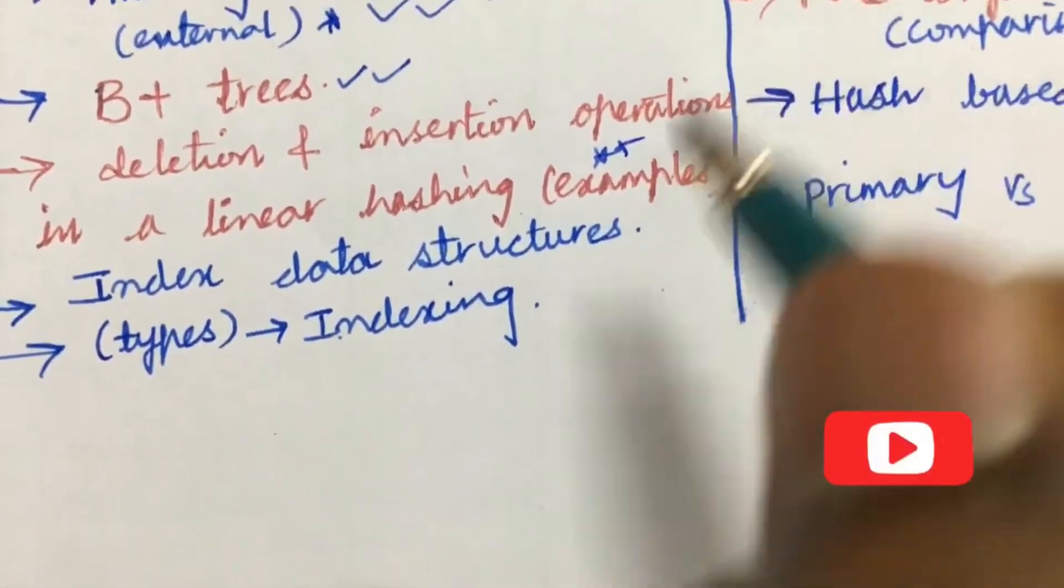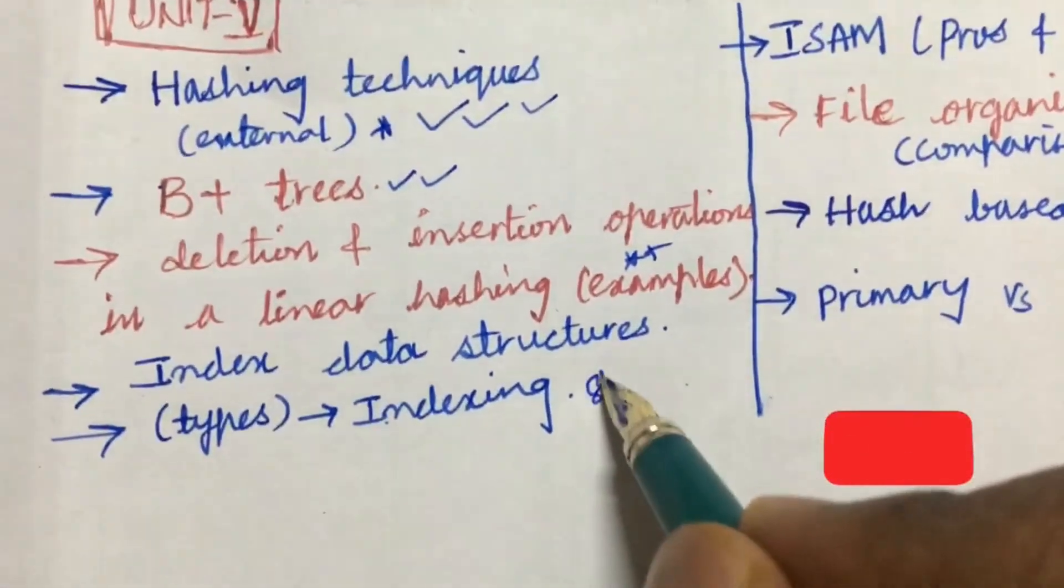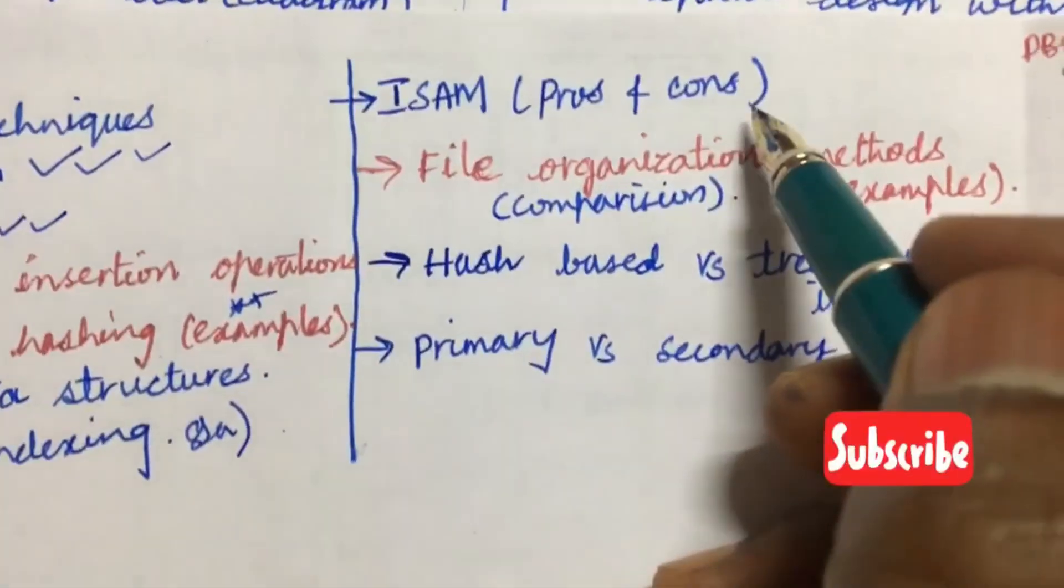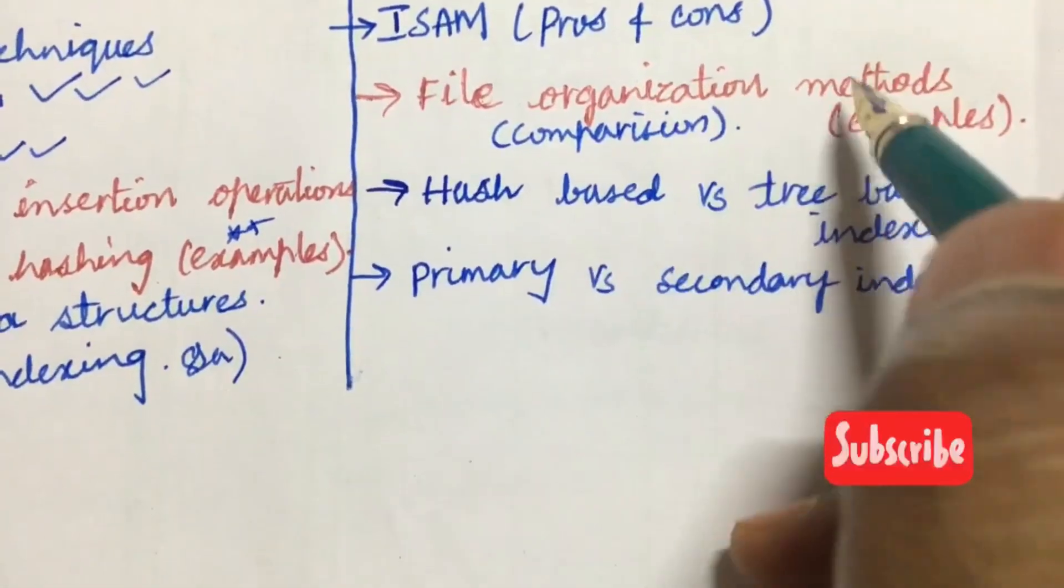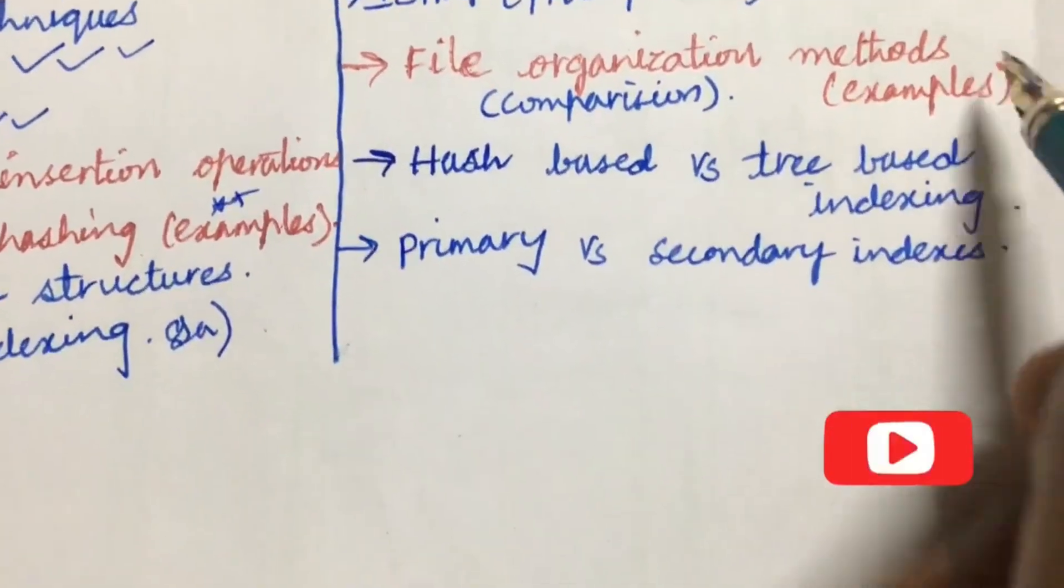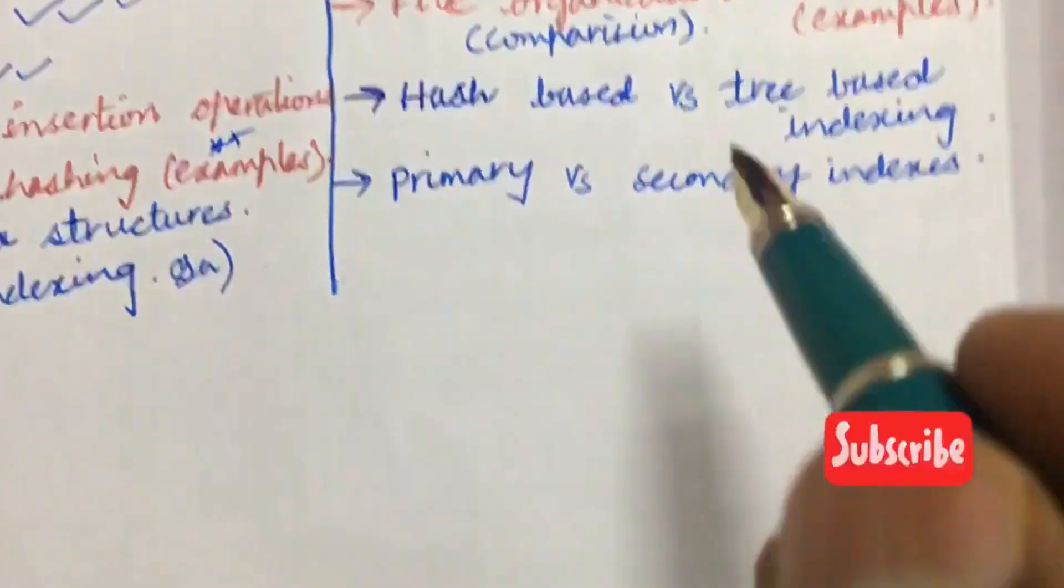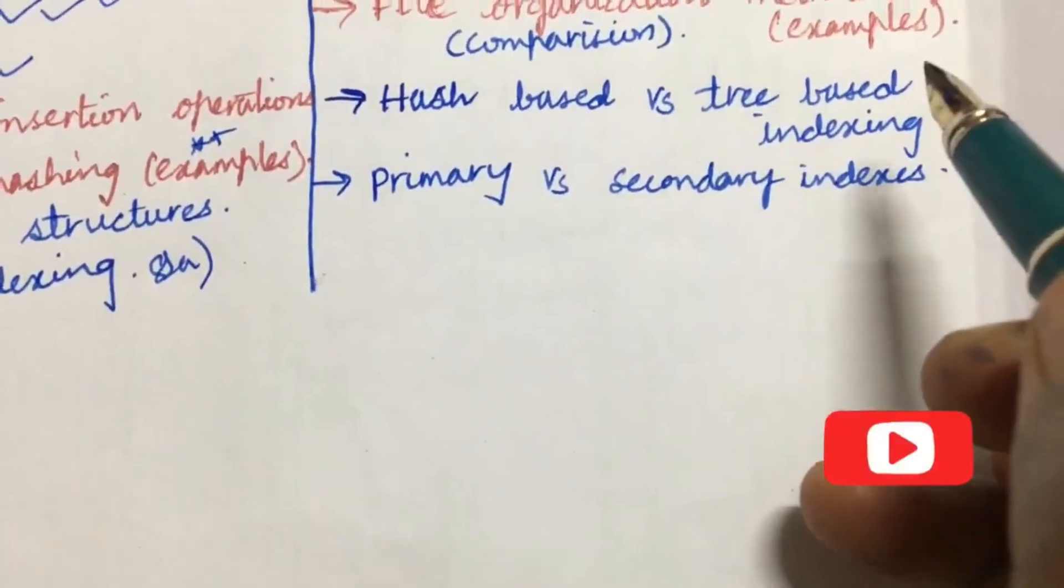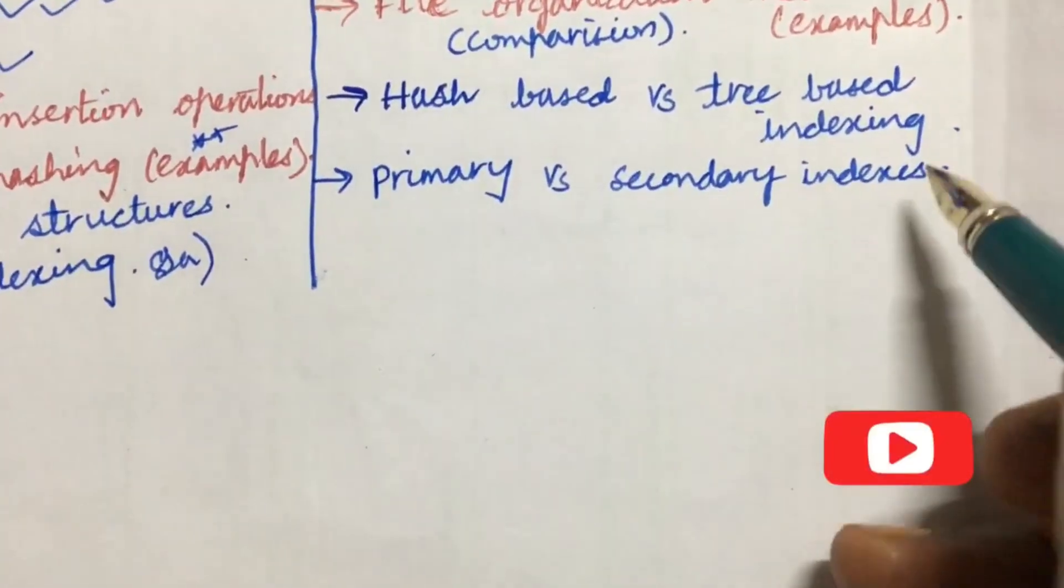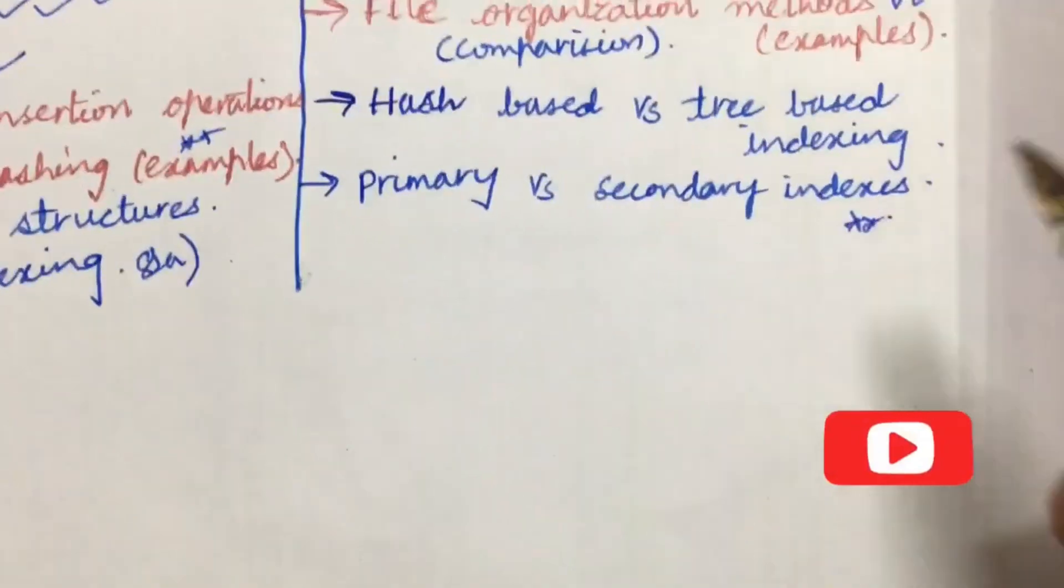Index data structures and indexing and its types may be 8A question. ISAM pros and cons and explain the terms as well as the file organization methods, its comparison and methods is one of the very important gunshot question. Hash-based versus tree-based indexing and primary versus secondary indexing, dear students.